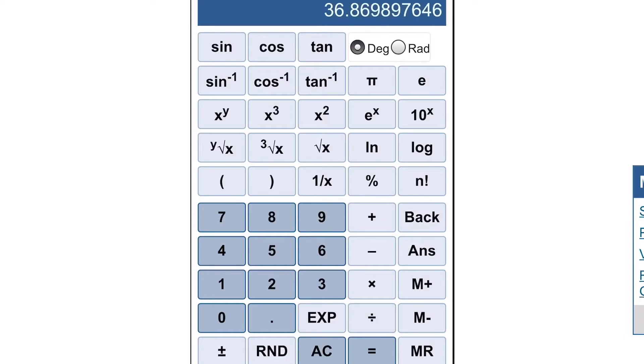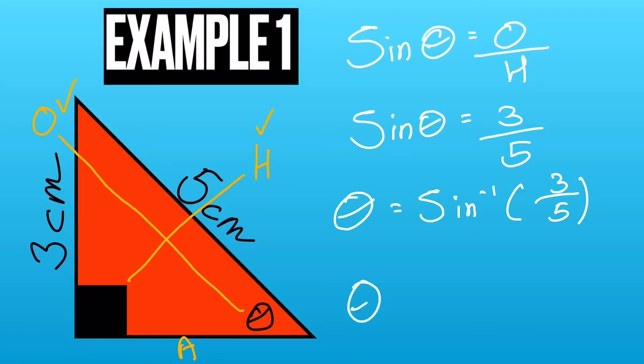3 divided by 5 and you should get the answer that you've got on screen at the moment. So theta equals 36.89 degrees.